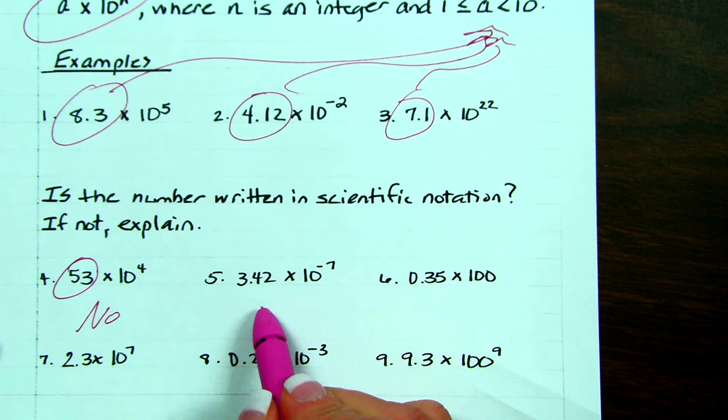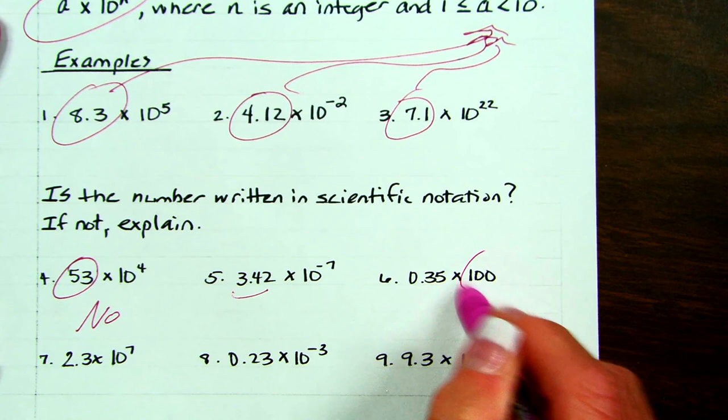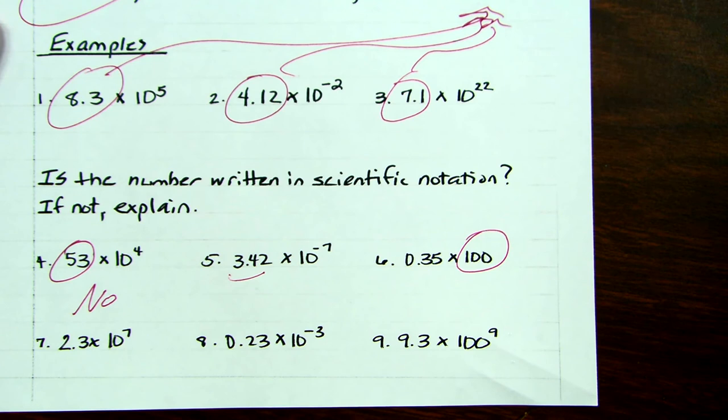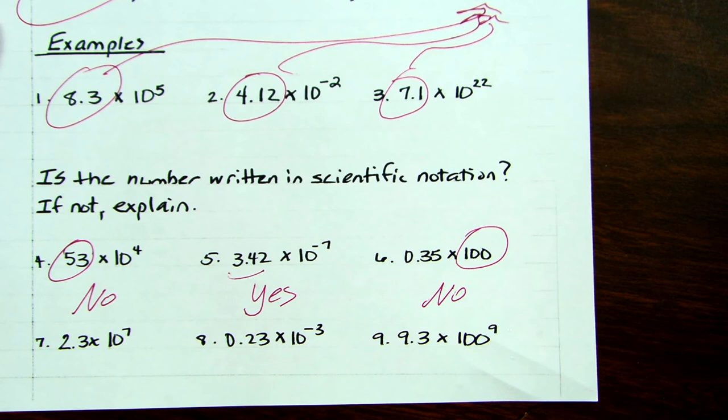This one is because that is between 1 and 10. This one is not because that's not written as a power of 10. That's just 100. It has to have an exponent. And you can look at the other three and see if they are written in scientific notation. And then you'll be able to look at the completed notes and see if you've got the answers correctly.